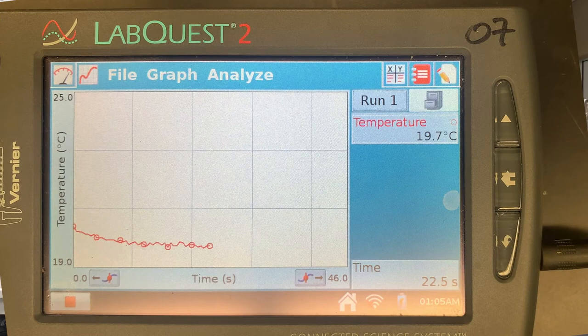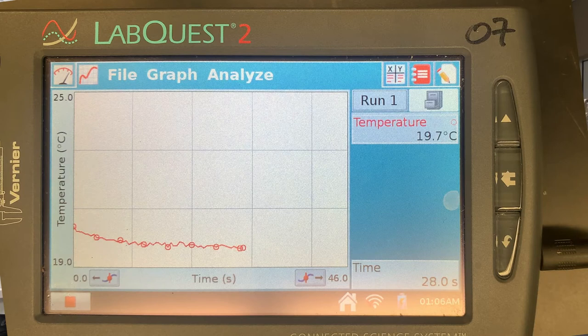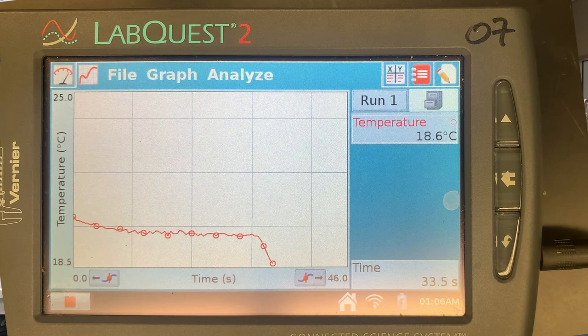We will first measure the initial temperature of the water. The initial temperature is about 20 degrees Celsius. We will now add our 3 grams of ammonium nitrate.